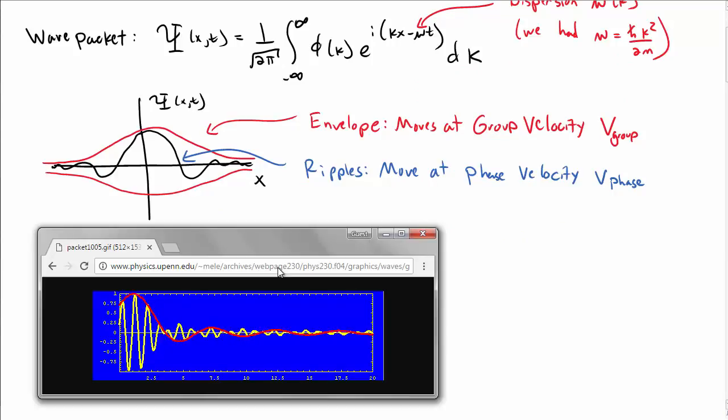Here's an animation where we have a group velocity and a phase velocity which are different from each other. This happens with water waves and it will happen with quantum waves as well. Shout out to the physics department at UPenn at this address.